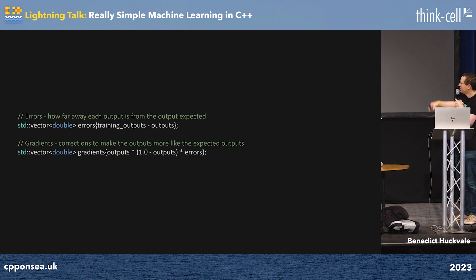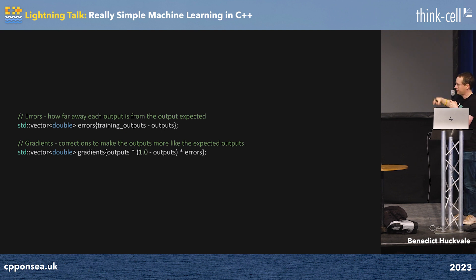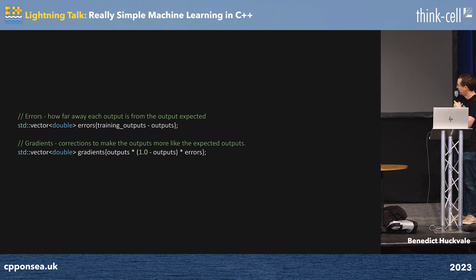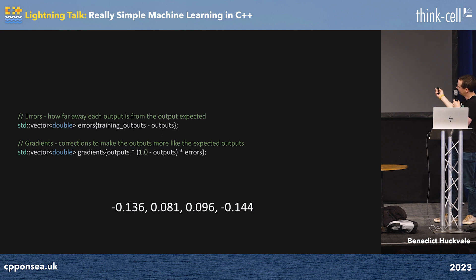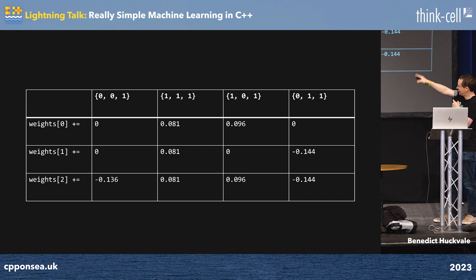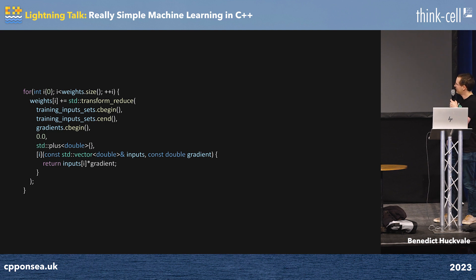The next thing is you have to work out how wrong your output was — which you just calculated from the training input — and use that to fix the weights you just used to create it. It's an iterative process. There's the gradient of the sigmoid in that gradients calculation. You end up with gradient outputs that you need to use in a kind of transpose operation to correct the weights and make a better output next time. Transpose is a really annoying function to write, so I used std::transform_reduce to do the inner part of it, though I still needed a for loop.